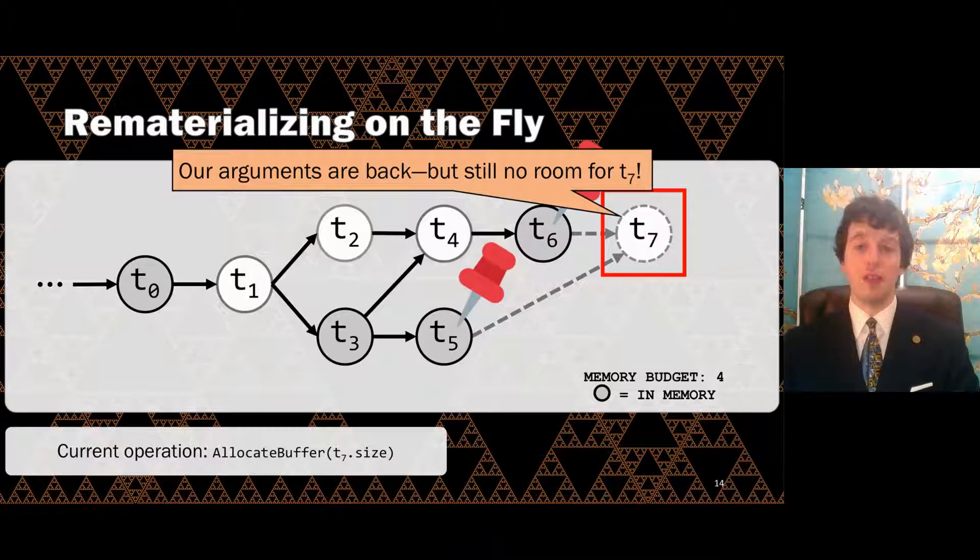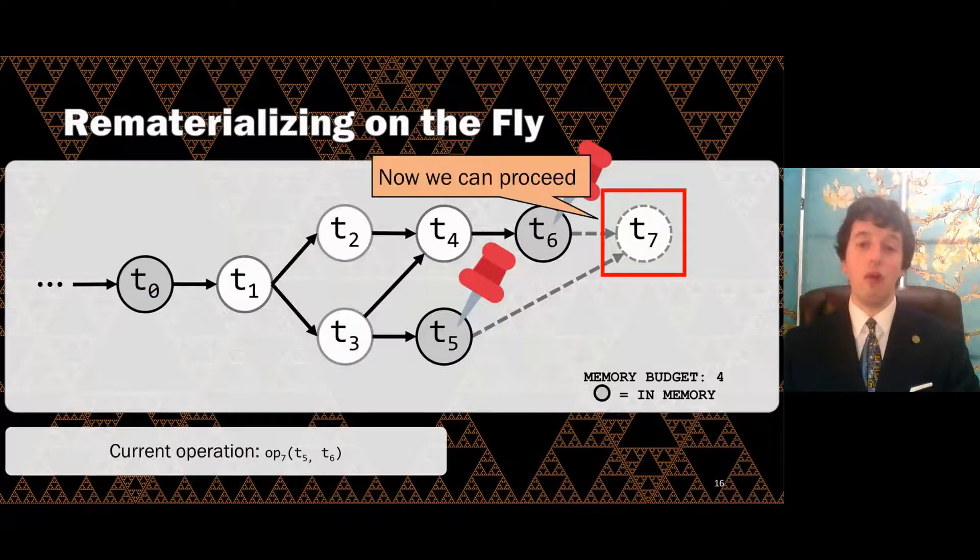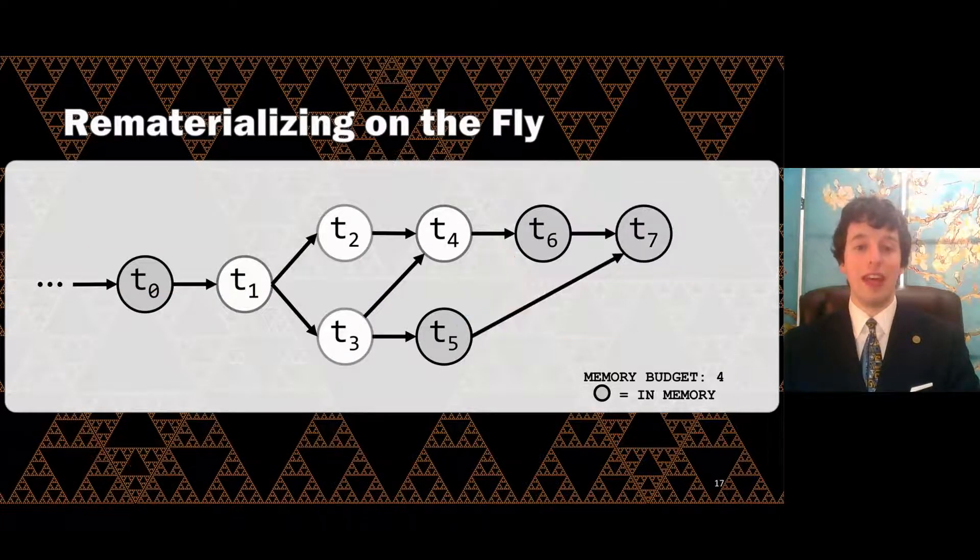Now we have room to recompute T5 using T3, so that's what happens next. T5 is back, so both of T7's parents are in memory, but we still don't have room for T7 itself. We have to evict again. T3 is no longer pinned, so the heuristic picks that to evict. Now we are free to compute T7, and the computation can now proceed, no matter what may lie ahead.